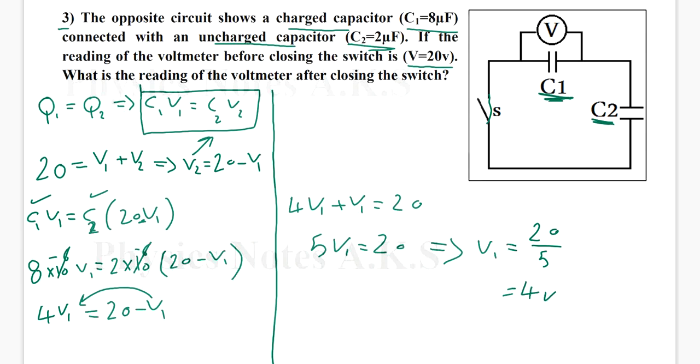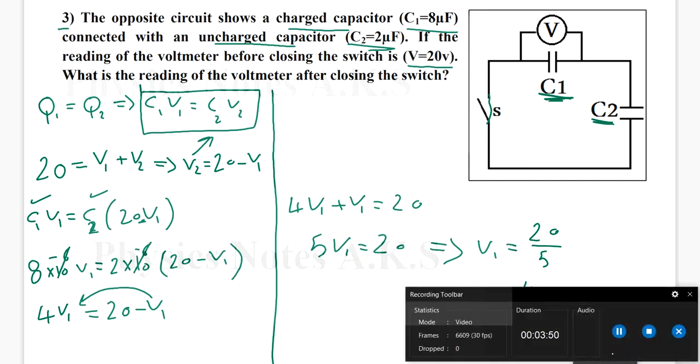So the reading of the voltmeter after closing the switch will be 4 volts. I hope it's clear. Make sure to understand it very well before you close it. Feel free to re-watch it again. If you have any questions, leave it under the video. See you. Have a nice day. Bye-bye.